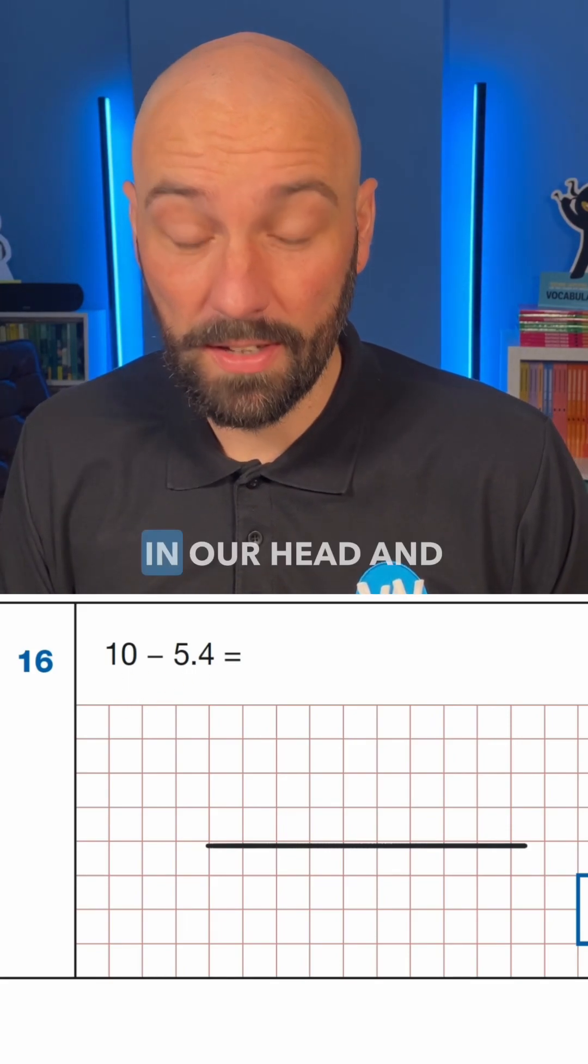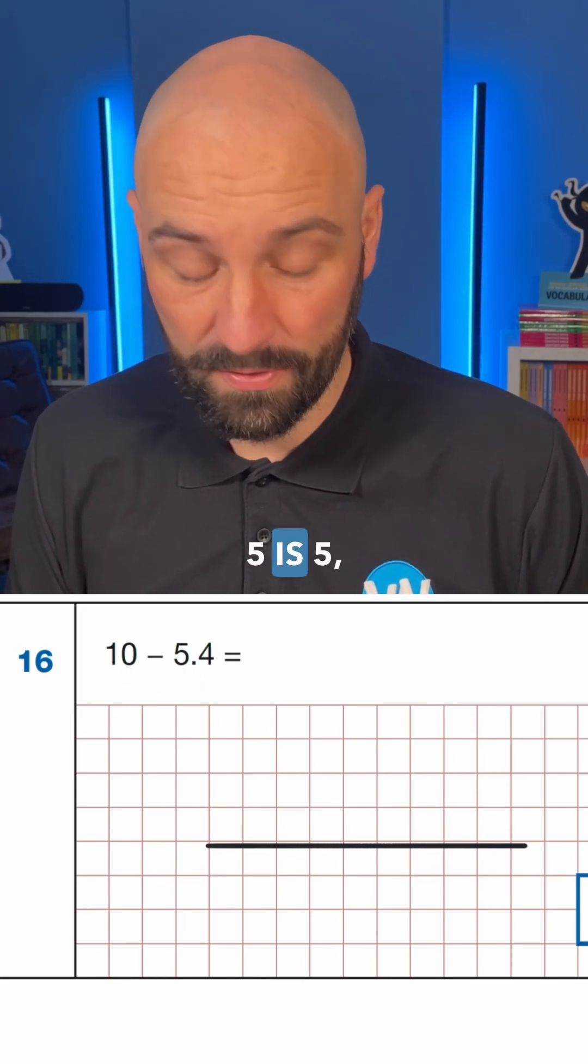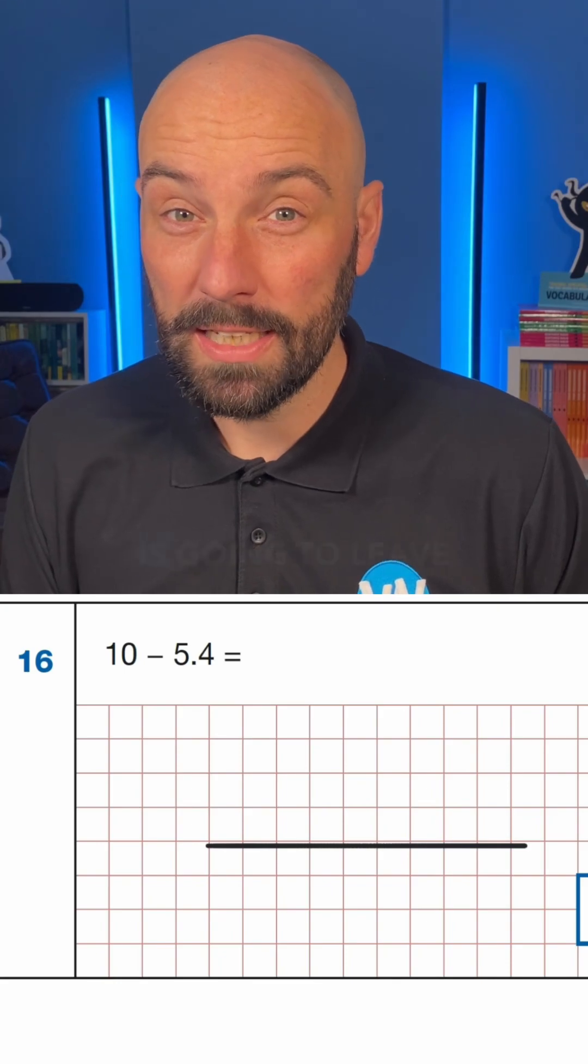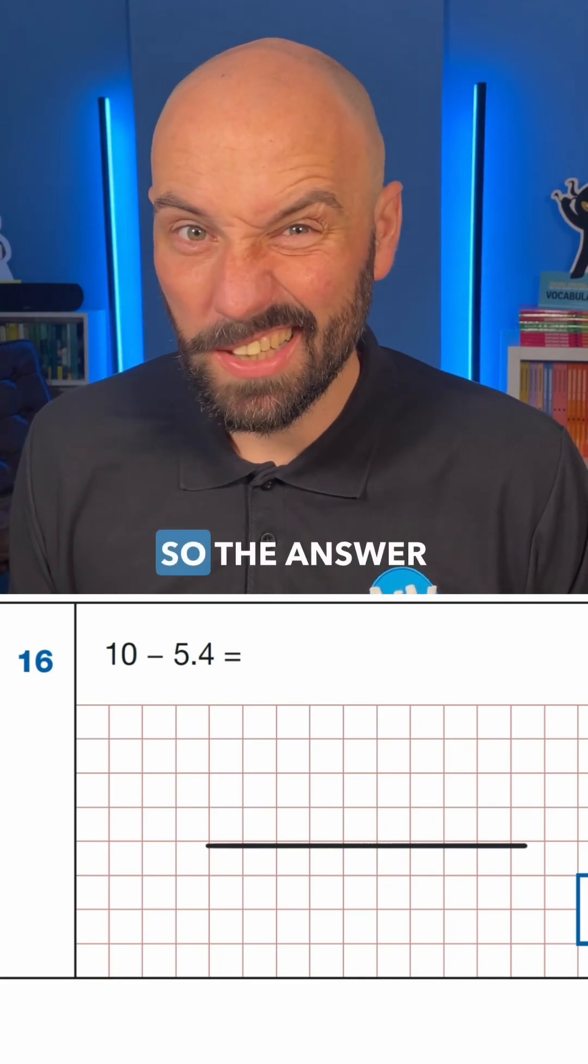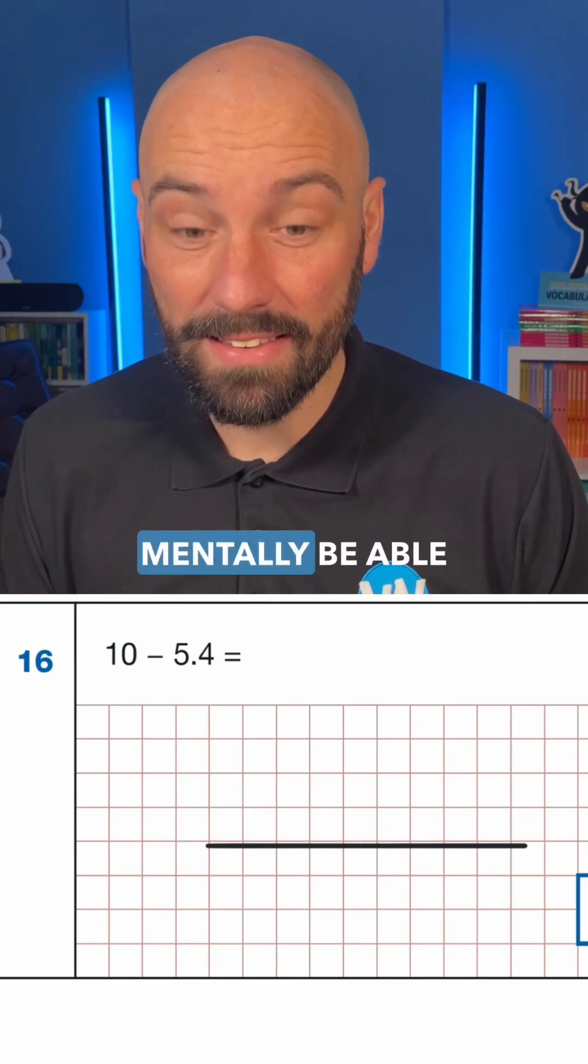Now ideally we would just be able to do this in our head and do 10 take away 5 is 5, take away 0.4 is going to leave us with 4.6. So the answer really should quite quickly mentally be able to do it.